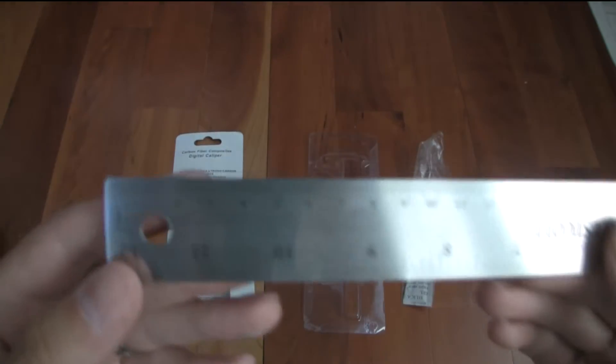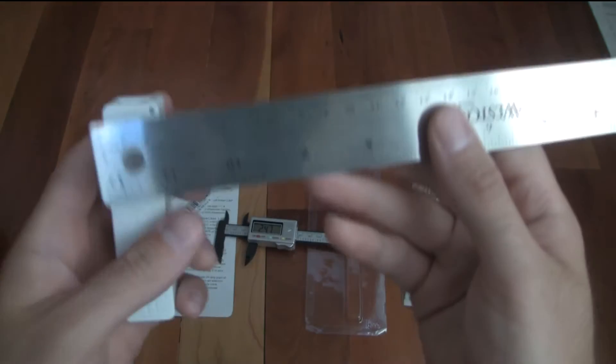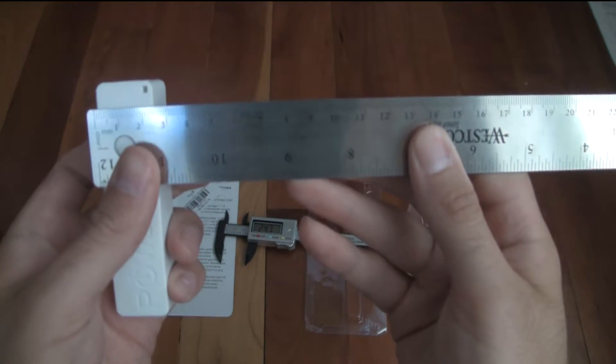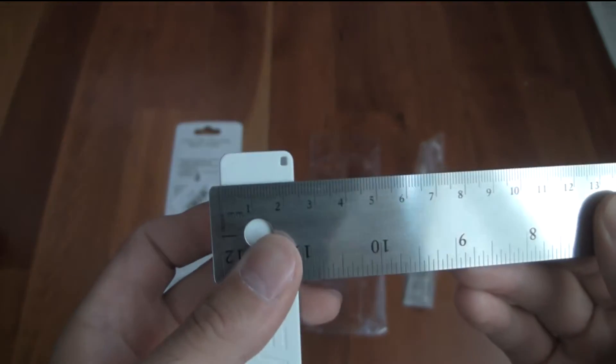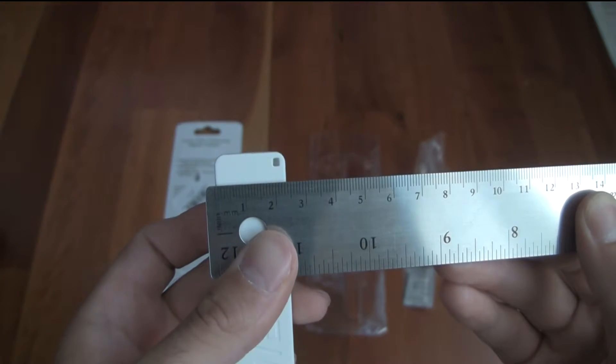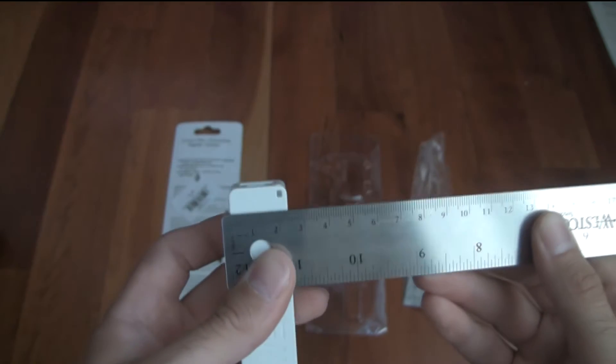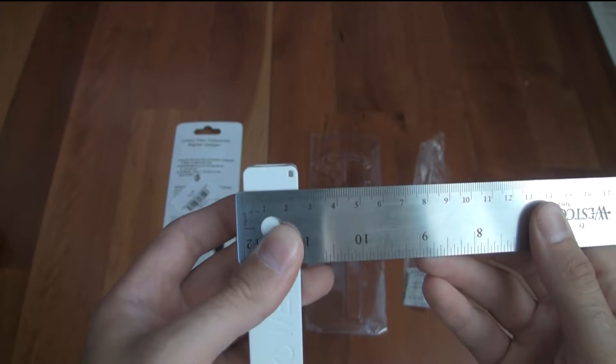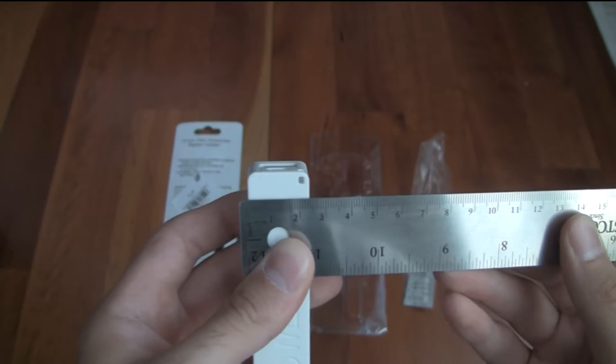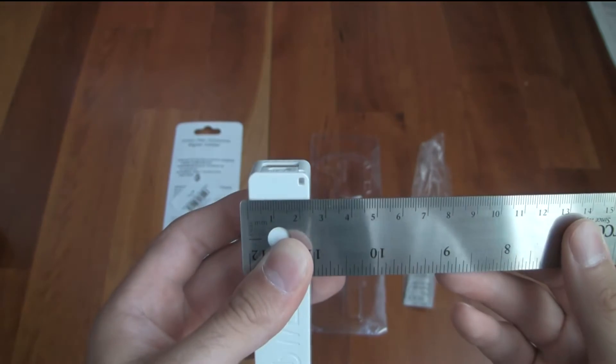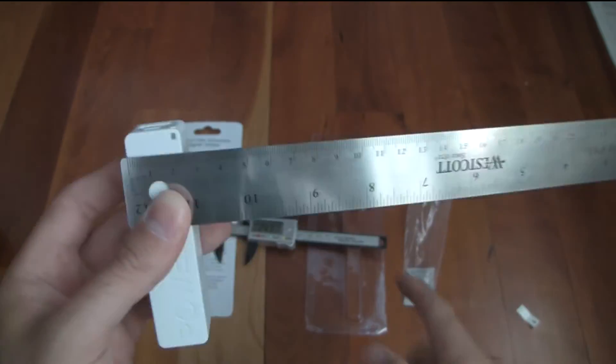So I have this traditional ruler. And let's see how wide it looks here. Looks like about 24mm to me. So it is very accurate. And this is just exact.